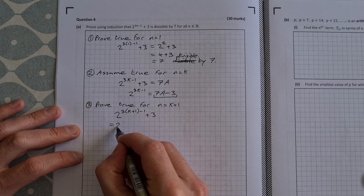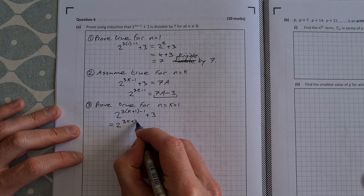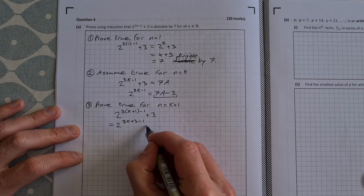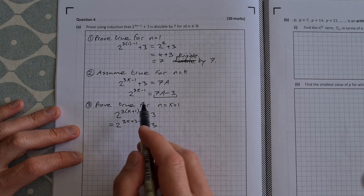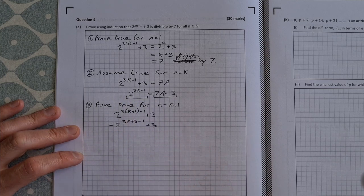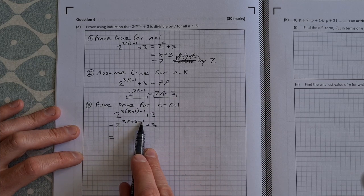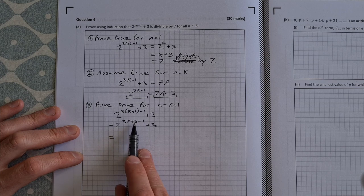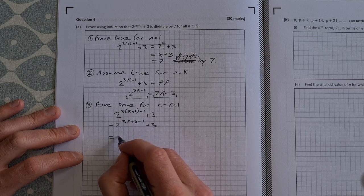So that is equal to 2 to the power of 3k plus 3 minus 1 plus 3. And what I'm going to do is I'm going to work on this to try and get 2 to the power of 3k minus 1 and then I can do my substitution. So if I say 2 to the power of 3k minus 1 this would be 2 to the power of 3. So I can take 2 to the power of 3 out as a factor here.